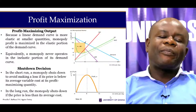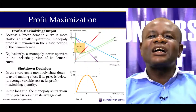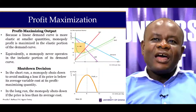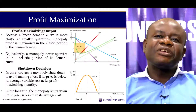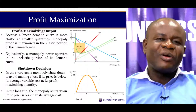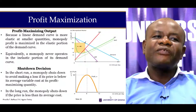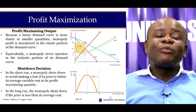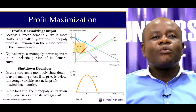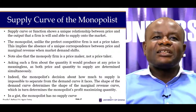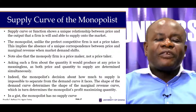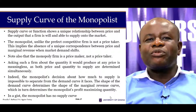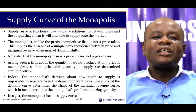Just as in a perfectly competitive market, the monopolist maximizes profit by equating marginal cost to marginal revenue. However, the monopolist charges a price greater than marginal cost — unlike the perfectly competitive firm — because marginal revenue lies below the demand curve. As for the supply curve, the monopolist has no unique relationship between output and price, so the monopolist has no supply curve.